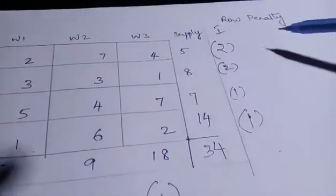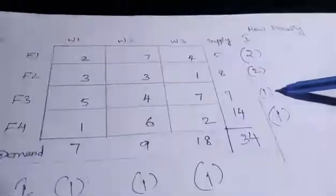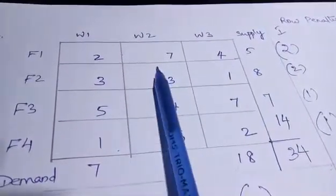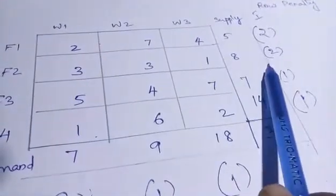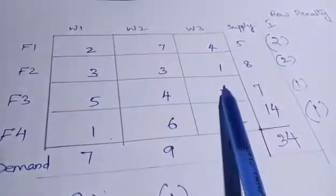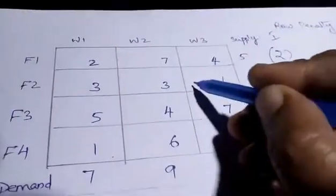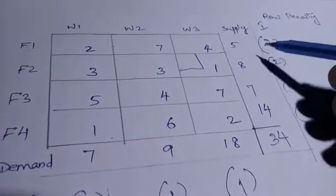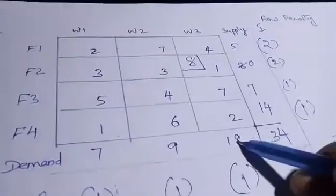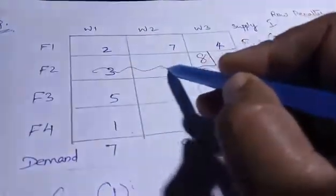The maximum penalty is 2. We select that row. Minimum value in that row is 2, and the allocation is the minimum of supply and demand — which gives 8. We write 8 in that cell and cut the satisfied column.